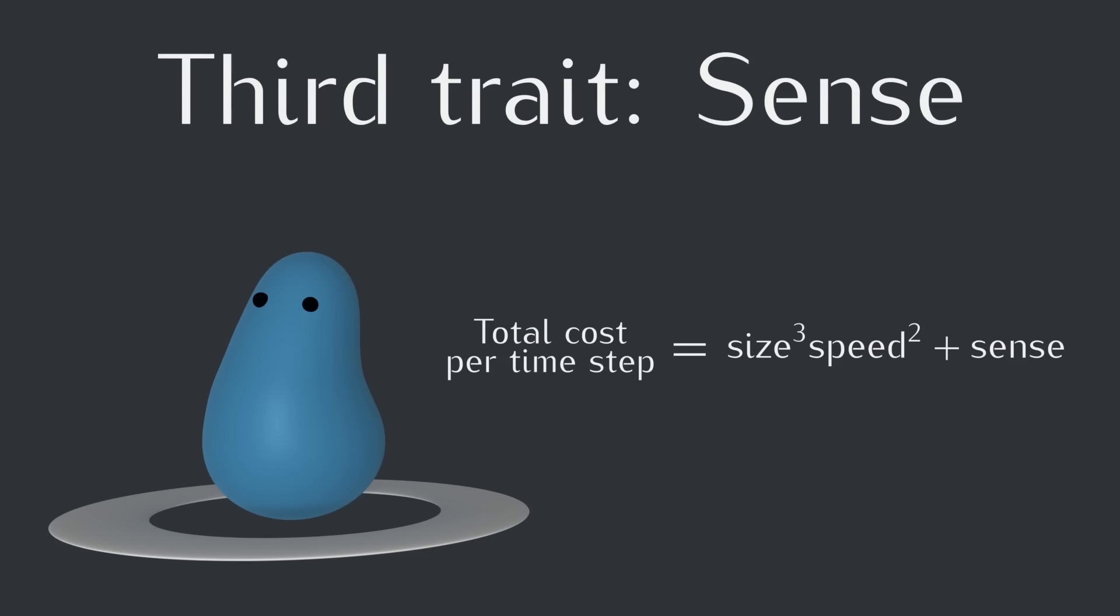Alright so now that we have three traits, let's rewind to before we turned on speed mutations, and instead turn on mutations for all three traits. To keep track of what's happening to all three traits at once, we're going to use this three-dimensional graph. Each dot in the graph represents one creature, and the position of the dot depends on the speed, size, and sense values for that creature. Alright let's see how it goes.